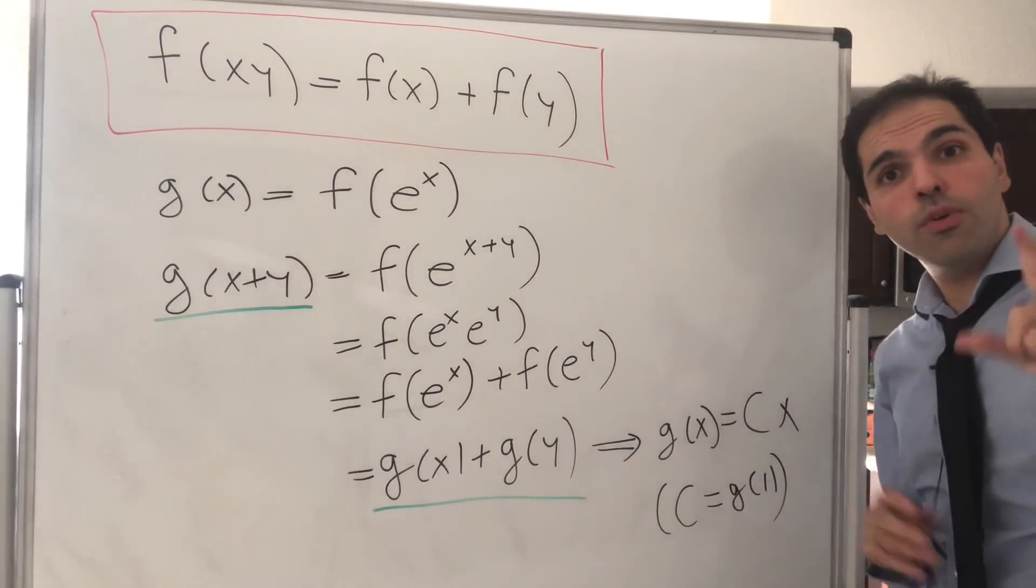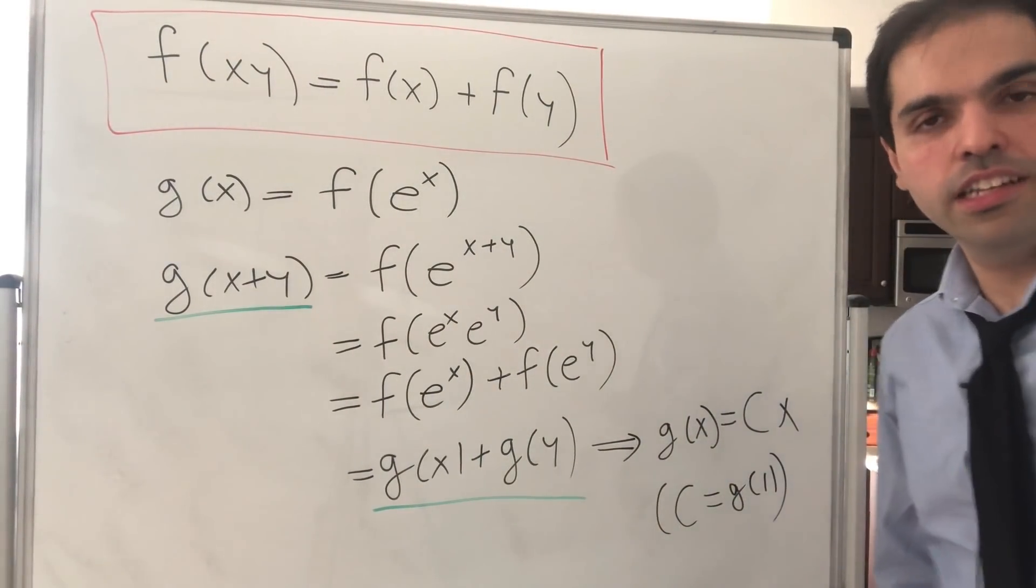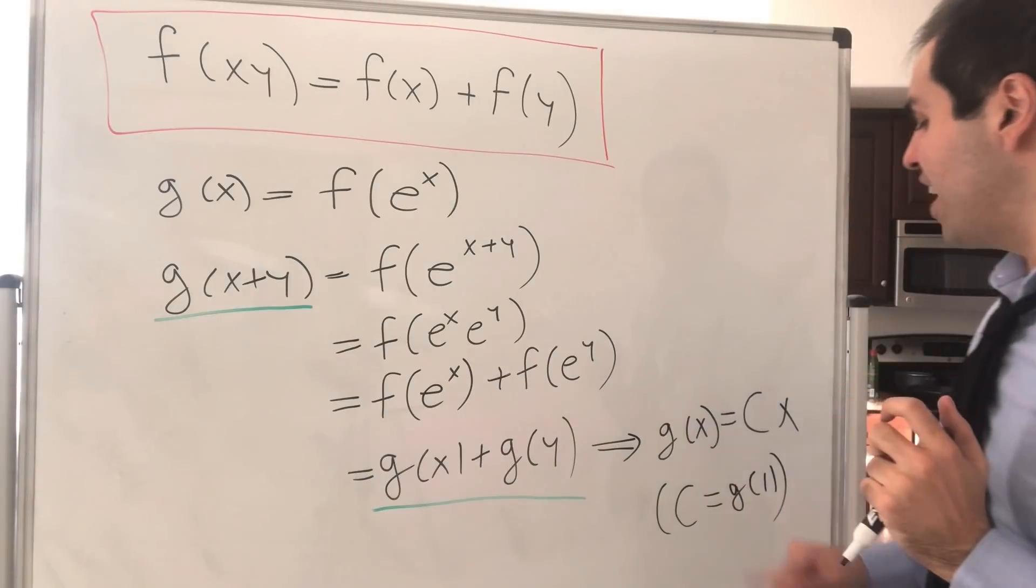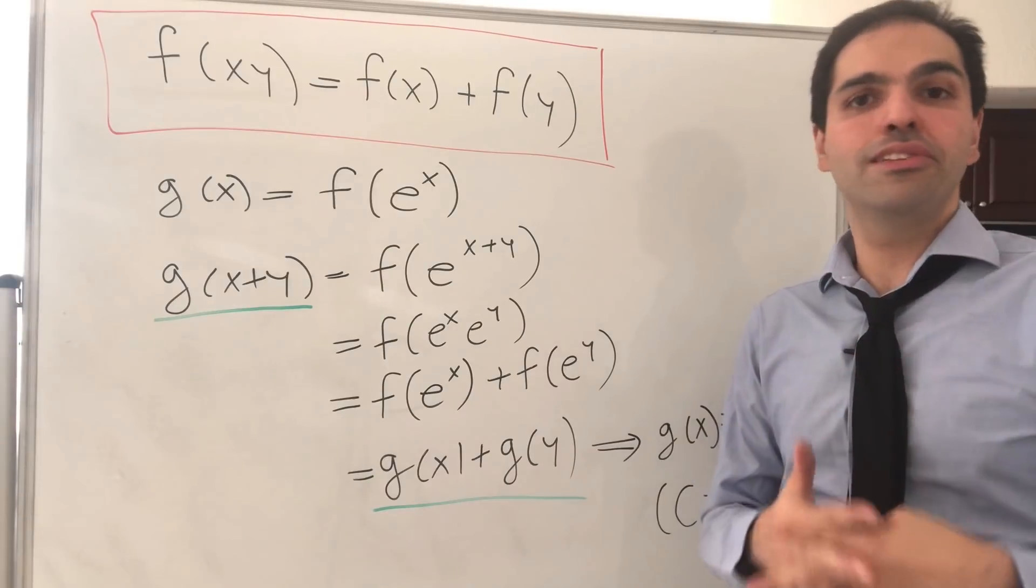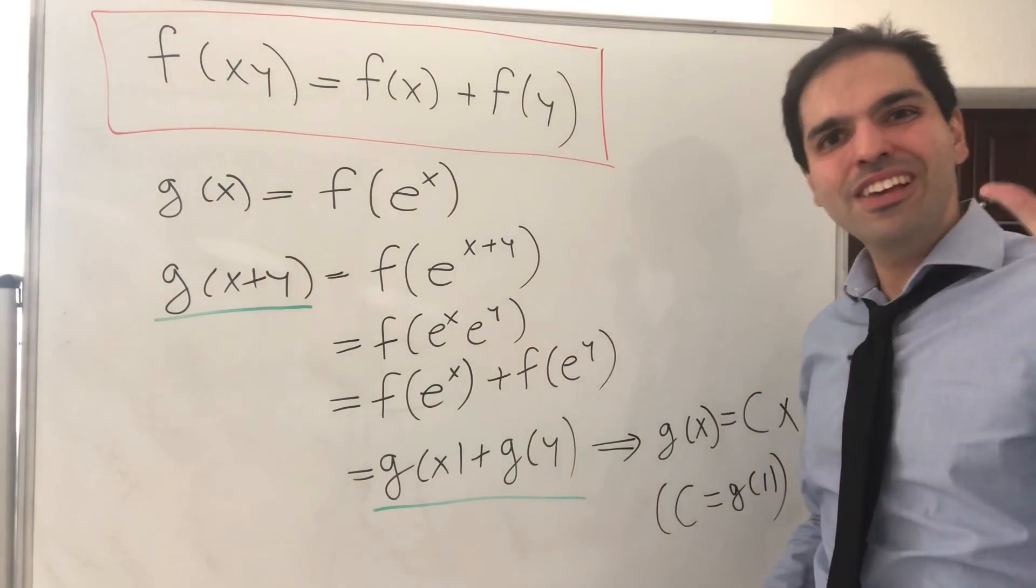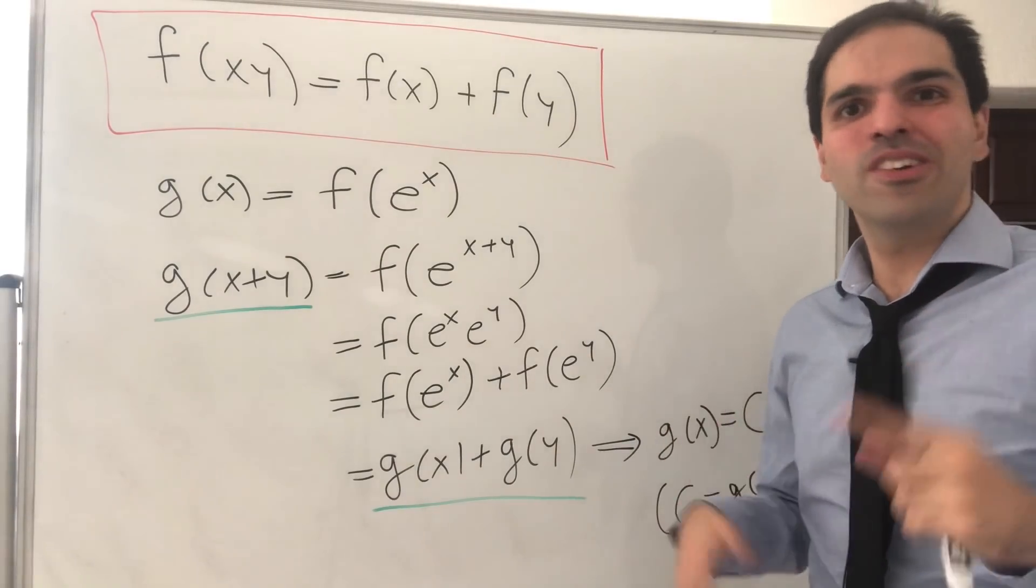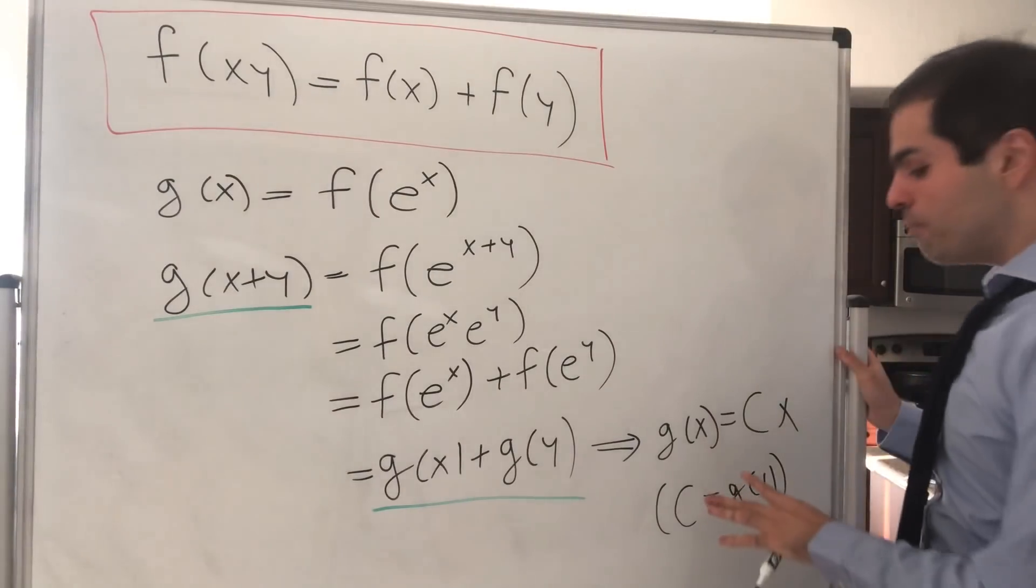And at this point, I would like to pause for a second, because there are many discontinuous functions which satisfy this as well. But the examples are kind of weird. It has to do with the basis of the real numbers over the rational numbers, and it has to do something with square root of 2, which is in the previous video.